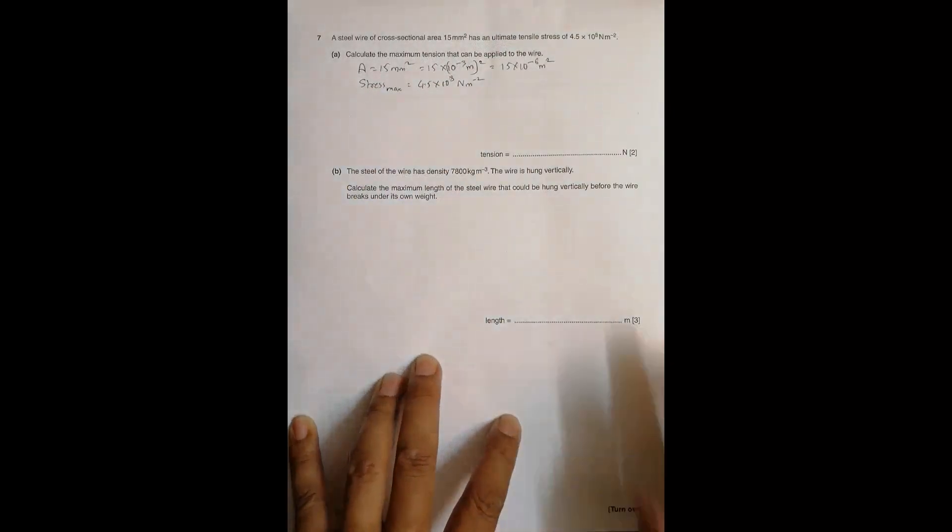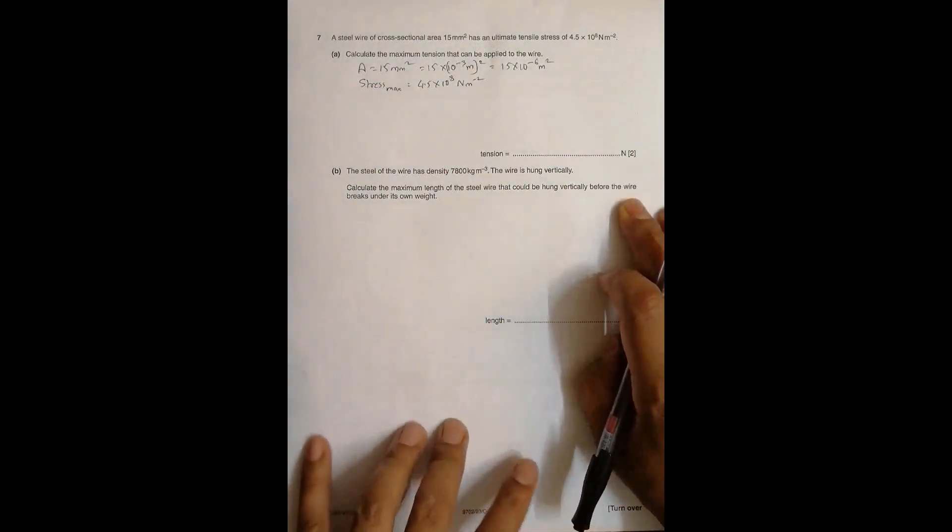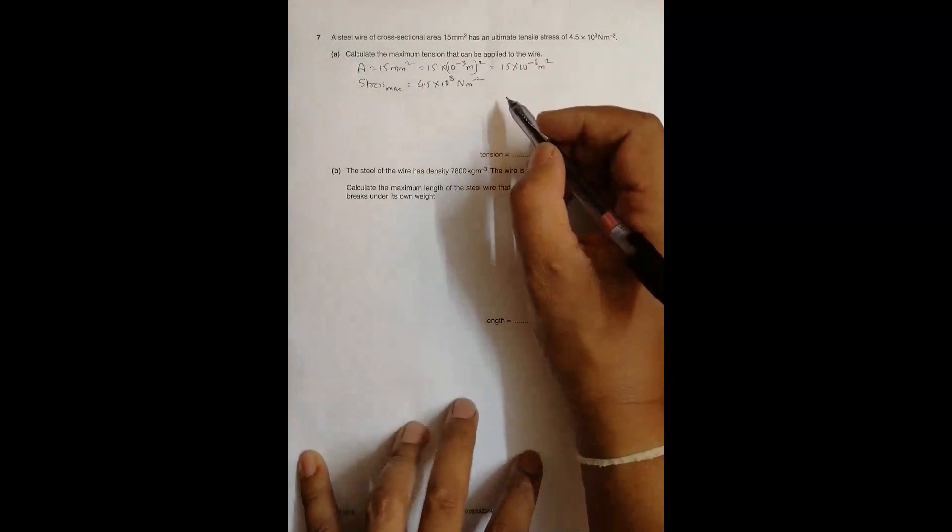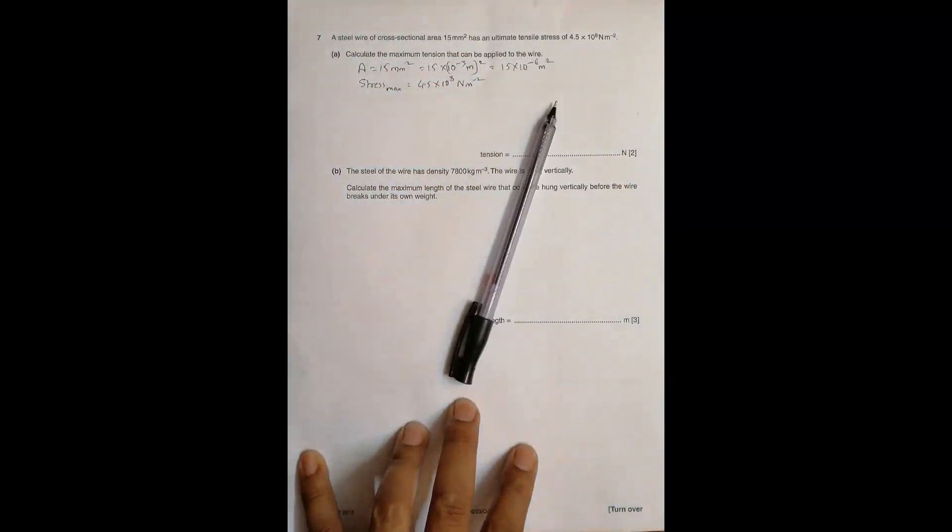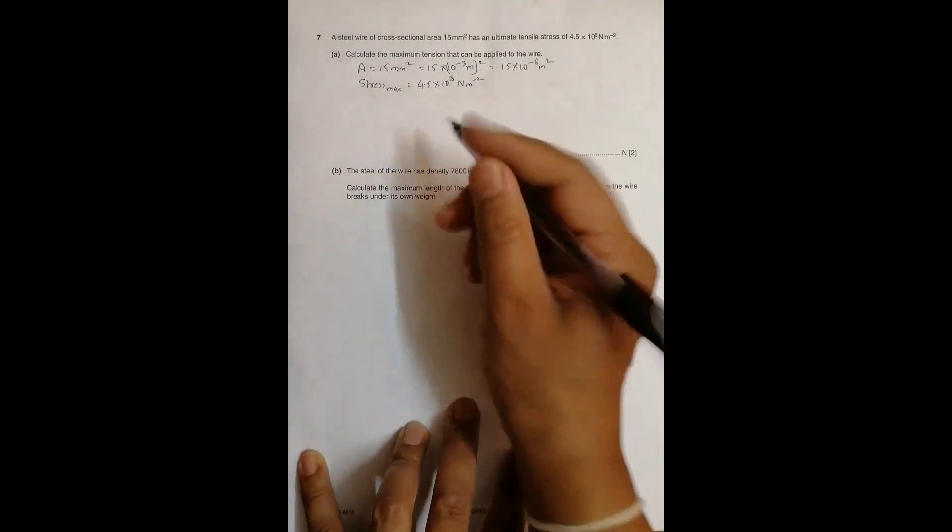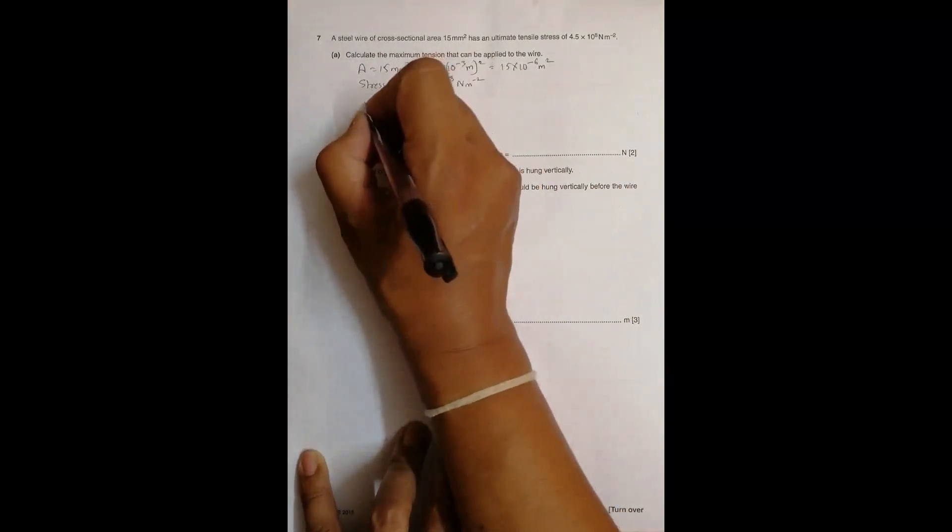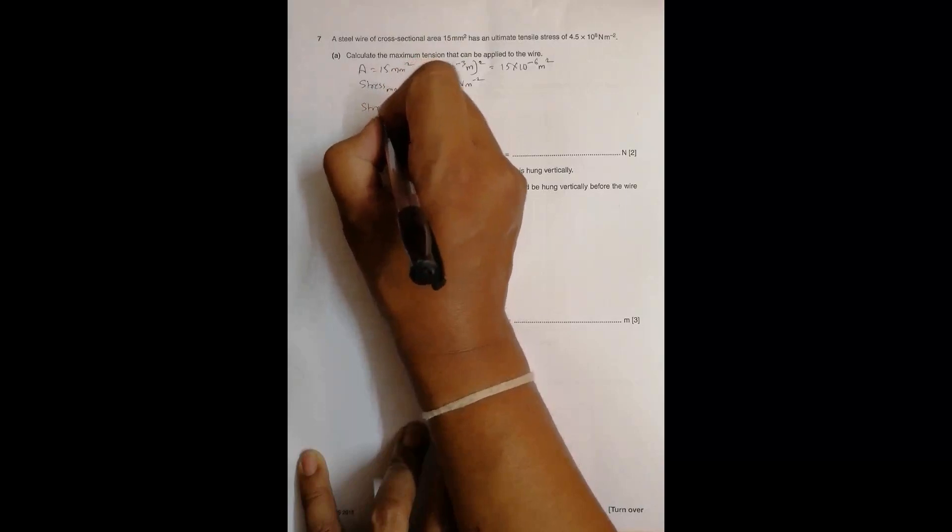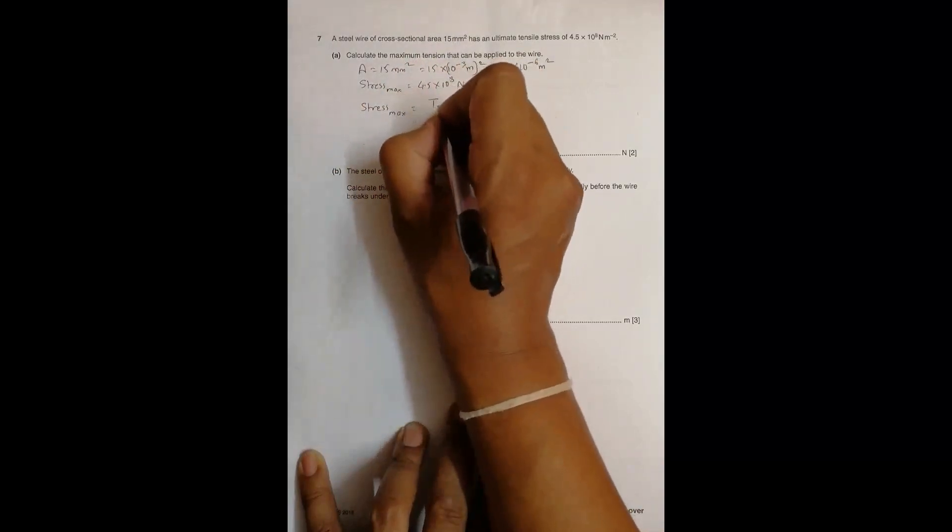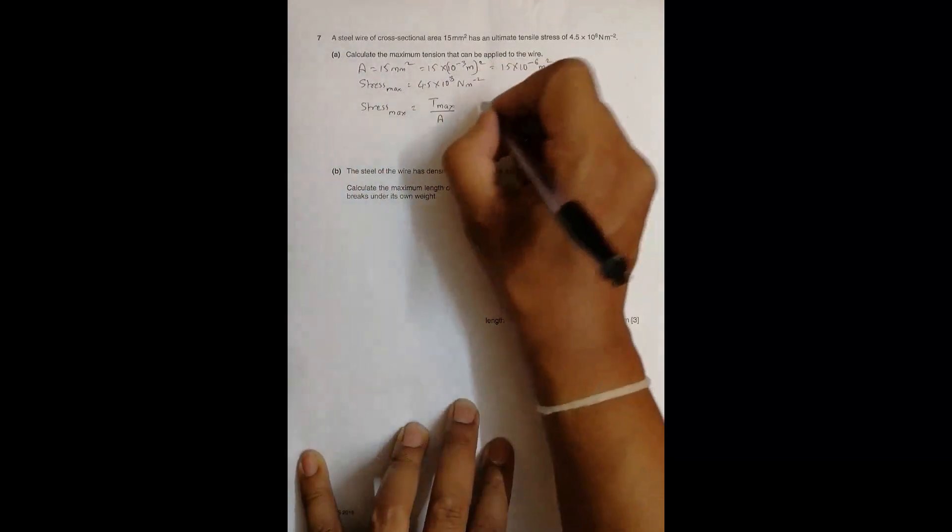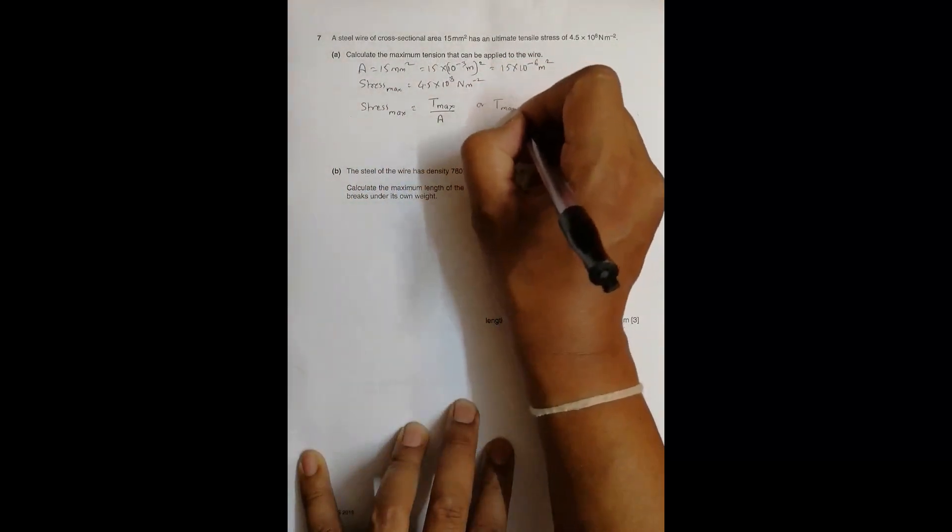It means that beyond that stress, the wire will snap. So we have to calculate the maximum tension that can be applied to the wire. That means we have to find the maximum force the wire can handle. So stress max should be equal to tension force max divided by the cross section.